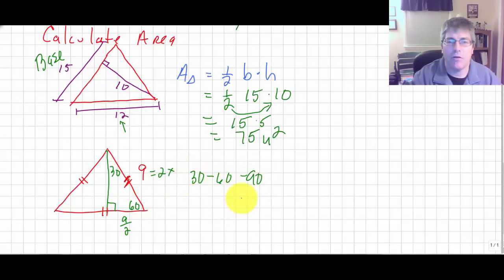And so I'm using my property of a 30, 60, 90, so 9, that's 4 and a half, or 9 halves, and that would be 9 square root of 3 over 2. So the area of my triangle is 1 half the base.